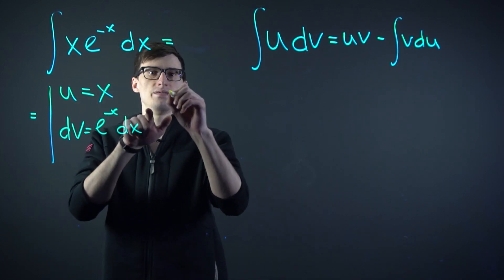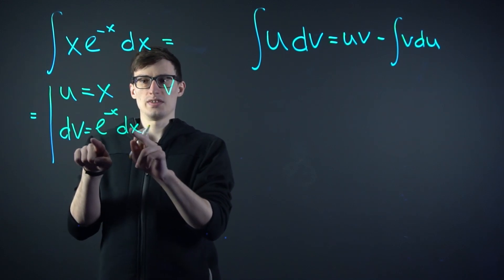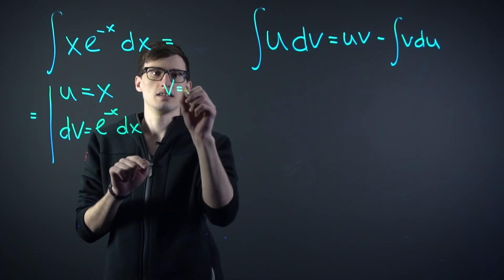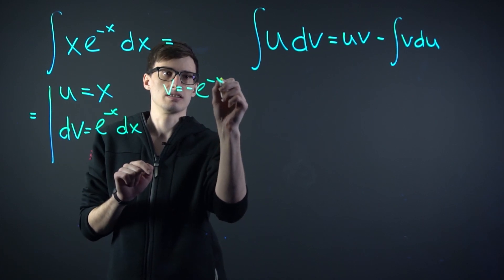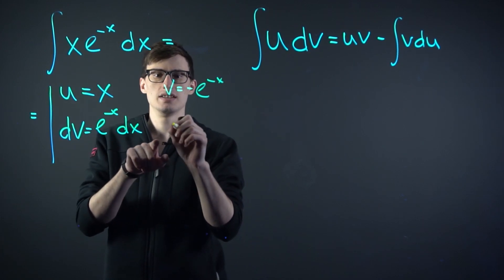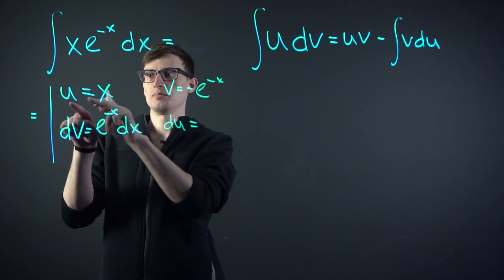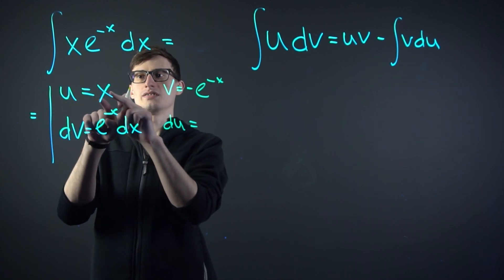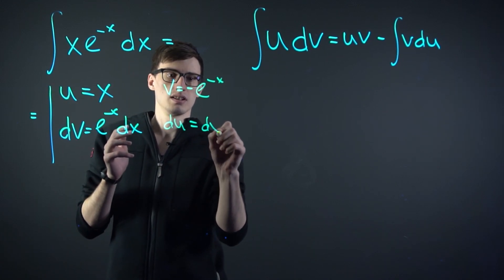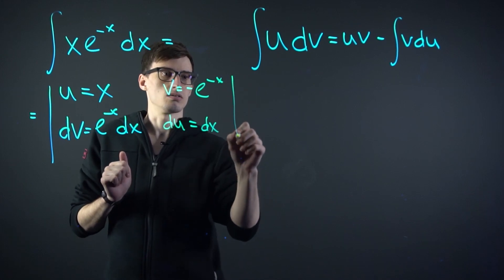And then v would be the integral of this. And obviously the integral of e to the minus x is minus e to the minus x. And then du would just be the derivative of u. And the derivative of x is obviously dx. So let's set this up.